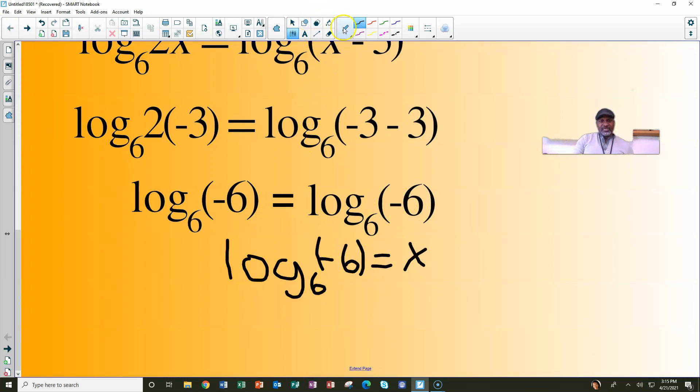If we take it and write it as an exponential, we've got to circle the 6, raise it to the power of x, and get negative 6. So that means we need to come up with an answer to this expression: 6 to the power of x needs to be equal to negative 6. So the question is, what power do I raise 6 to in order to get a negative 6?